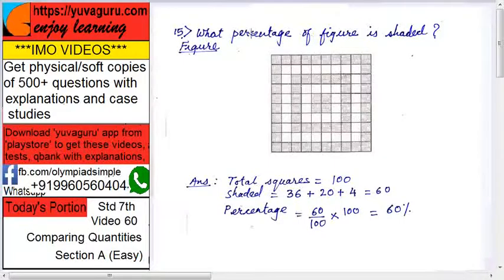What percentage of the figure is shaded? See, this is the figure and these are the shaded ones, dark ones, and these are the unshaded ones, white. So calculate how many squares are there total. See here, this square is 10 by 10. So total square is 100, area, side square.